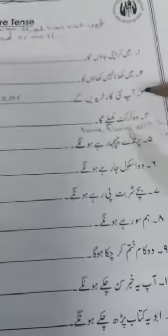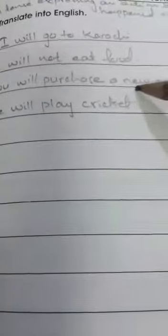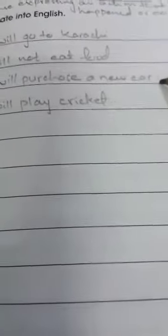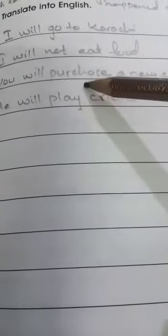The third one is, you will purchase a new car. We use the first form of the verb in future indefinite tense. Like go, eat, purchase. Clear?